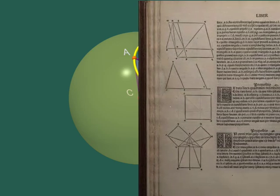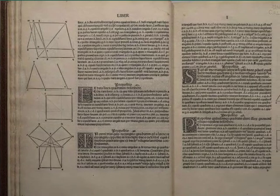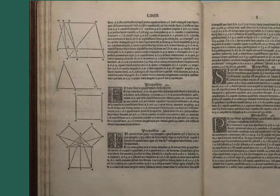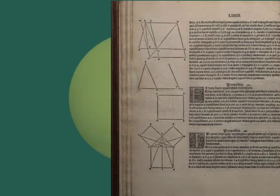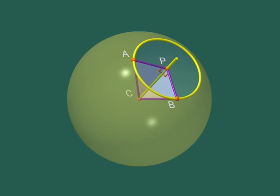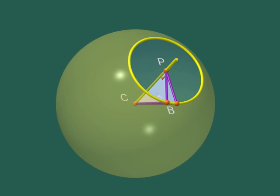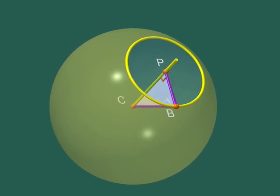But remember Pythagoras' theorem. Since our two right angle triangles have two sides of the same length, their three sides must have the same length. Hence, we have proved that PA and PB have the same length, that is, that A and B are on the same circle with centre P, in the blue plane.